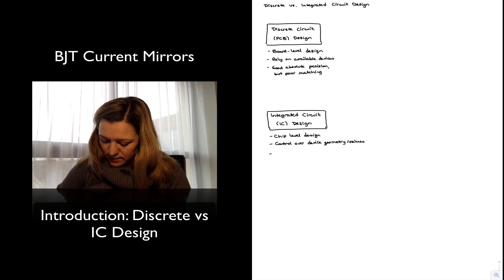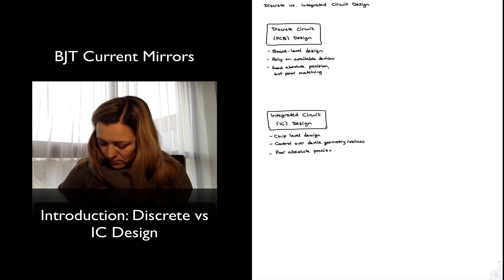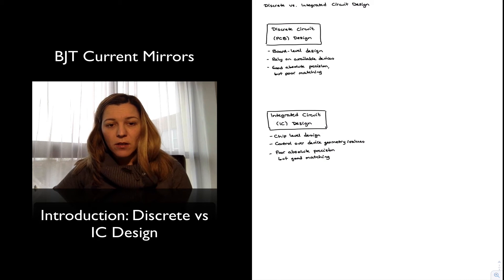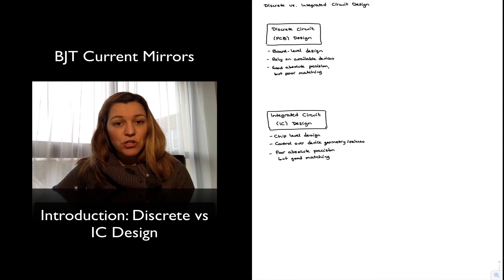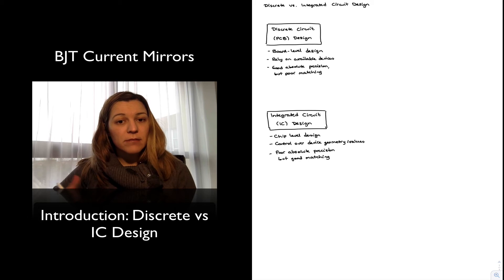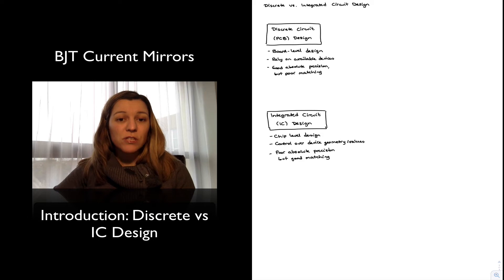In IC design we have poor absolute precision but inherently good matching between devices. Another difference is that in discrete circuit design we are able to use relatively large capacitors and resistor values without suffering any consequences. In IC design, it is going to be impractical to build capacitors larger than hundreds of picofarads, and large resistors are also impractical; resistors in general occupy a lot of real estate in an integrated circuit.